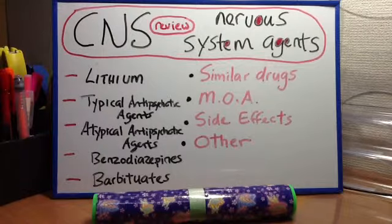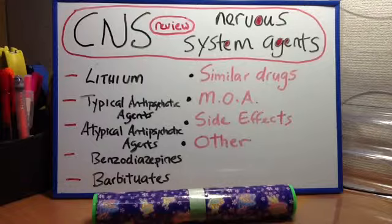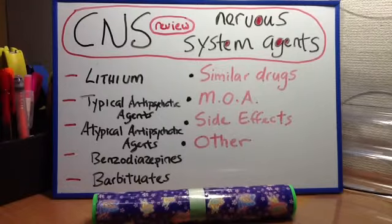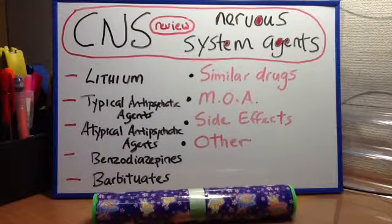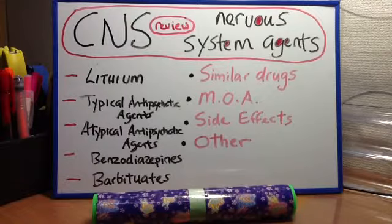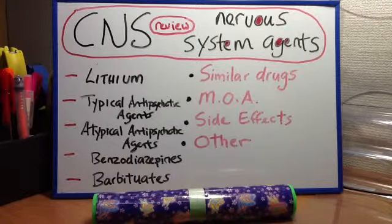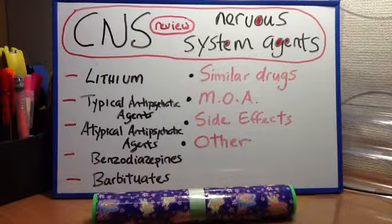Benzodiazepines. Similar drugs include triazolam, midazolam, lorazepam, and diazepam. MOA: enhanced GABA receptor activation, decreased activity of the neurons of the limbic, thalamic, and hypothalamic regions of the CNS. Clinical uses: anxiety, seizures, status epilepticus, alcohol withdrawal, and anesthesia. Side effects: sedation. Other: patients may experience withdrawal symptoms.